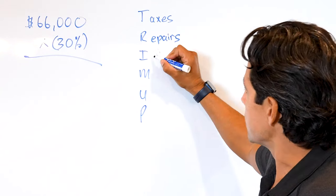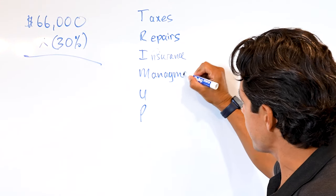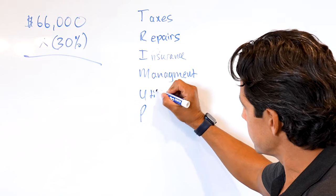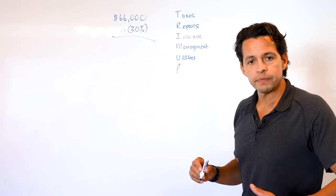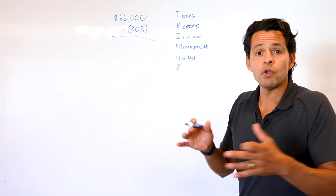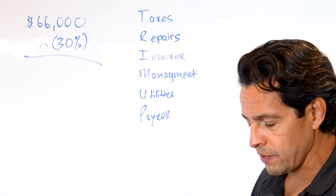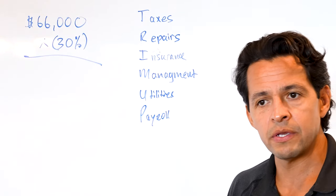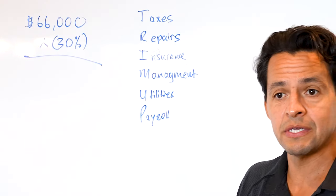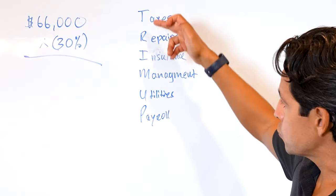You're going to have your own taxes on the property. You're going to have repairs, insurance. Next is management. This would be if you have a property manager. You're going to have utilities, so this would be water and electric bill, gas bill. Sometimes it might be water, sometimes you have no utilities. And the last one's payroll. The only reason I'm including this is that if you're watching this video but you're buying something that's much larger, 16 units, 20 units and above, you're going to have payroll.